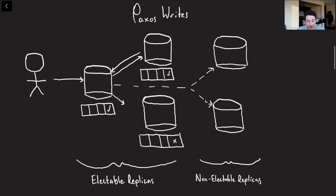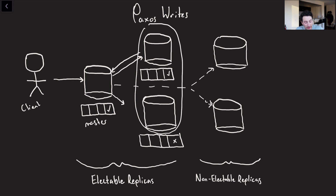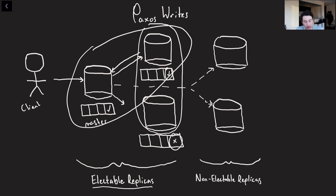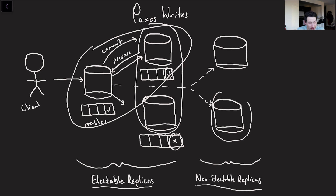Let's quickly touch on Paxos writes, which are effectively the same as a Raft write. The write first goes to the master, which then attempts to apply it on all replicas — the electable replicas are the ones we care about for achieving quorums. If it works on one replica and fails on another, that's okay because we've hit a two-of-three quorum and can commit. It's kind of like a two-phase commit with a prepare phase, then the master says commit. SSO also has non-electable replicas — read-only standbys — which can be useful when data doesn't change often, taking some read load off the master.